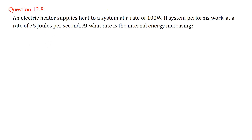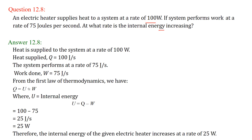An electric heater supplies heat to a system at a rate of 100 watts. The system performs work at a rate of 75 Joules per second. From the first law of thermodynamics, Q equals U plus W, so U equals Q minus W, which is 100 minus 75 equals 25 Joules per second, or 25 watts. The internal energy is increasing at a rate of 25 watts.